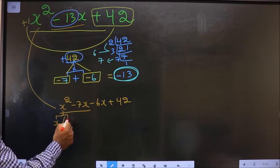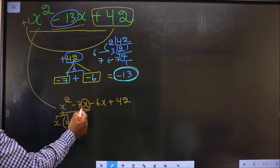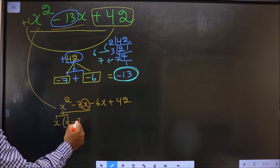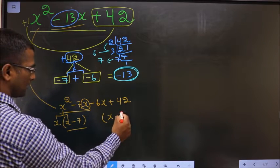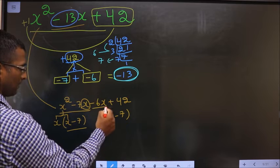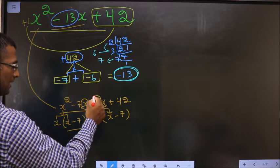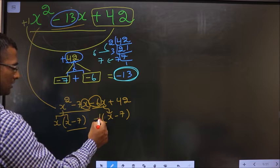One x is gone out, another x is inside. This x is gone out, so left out with -7. Here you got x - 7, means here also it should be x - 7. From this, x has gone inside, leaving you with -6 outside.